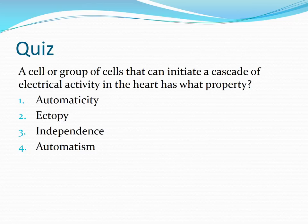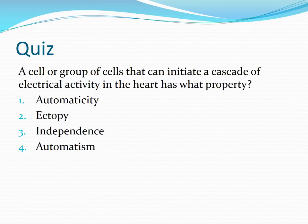Next question: A cell or group of cells that can initiate a cascade of electrical activity in the heart has what property? 1. Automaticity. 2. Ectopy. 3. Independence. 4. Automatism. The correct answer is automaticity. Remember, this is the property that the SA node has. The AV node also has this property where they can actually begin the electrical cascade and technically determine the heart rate.